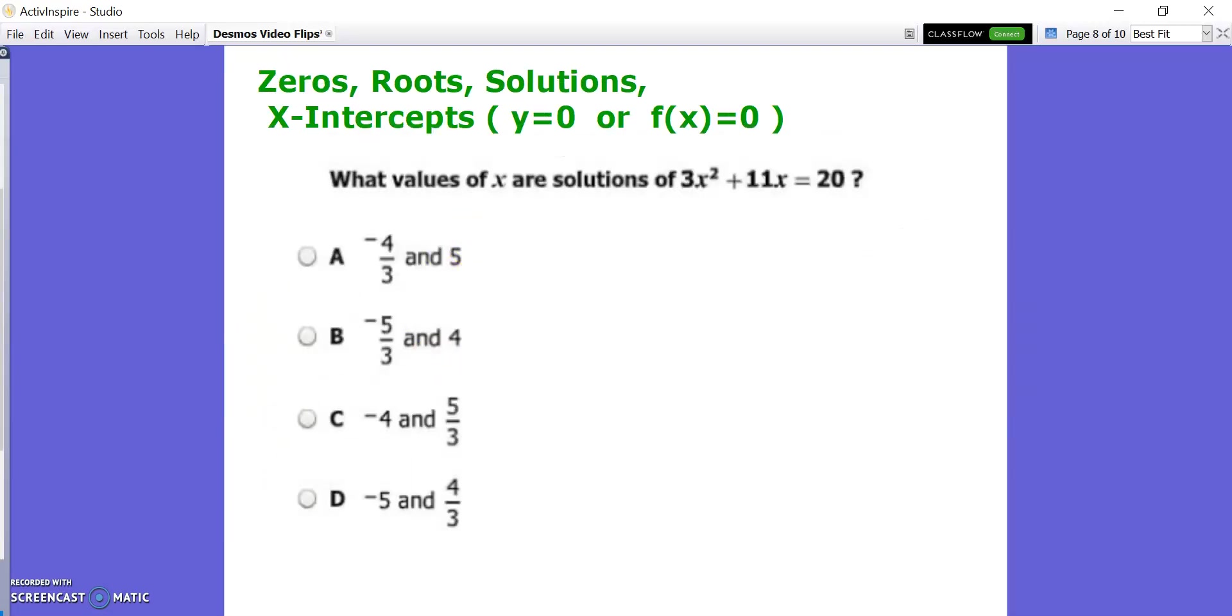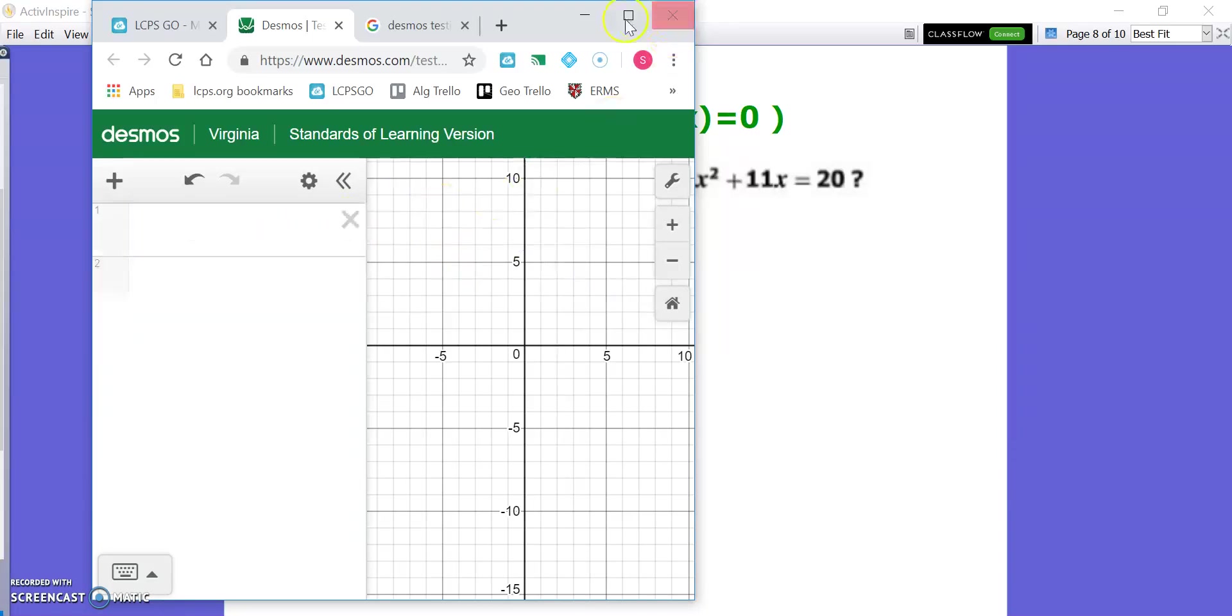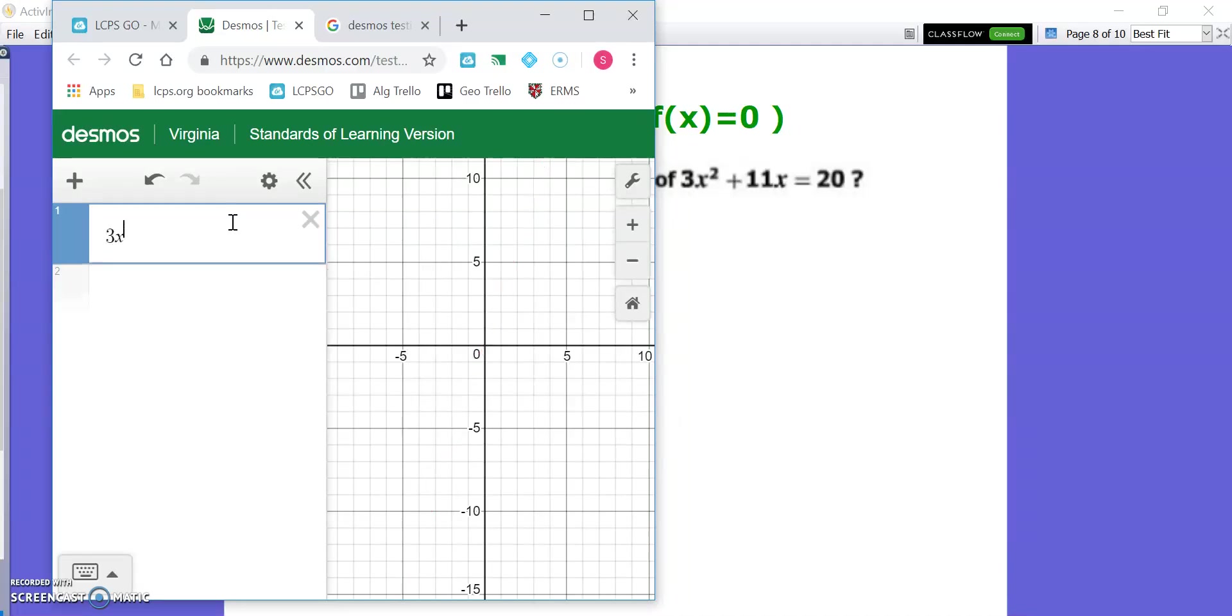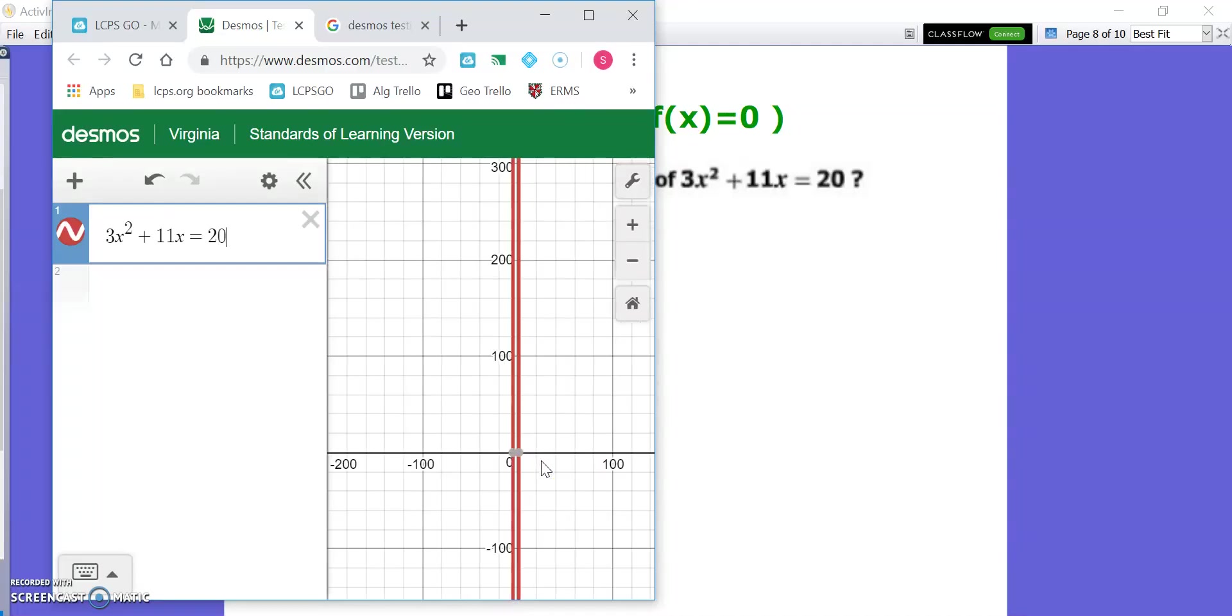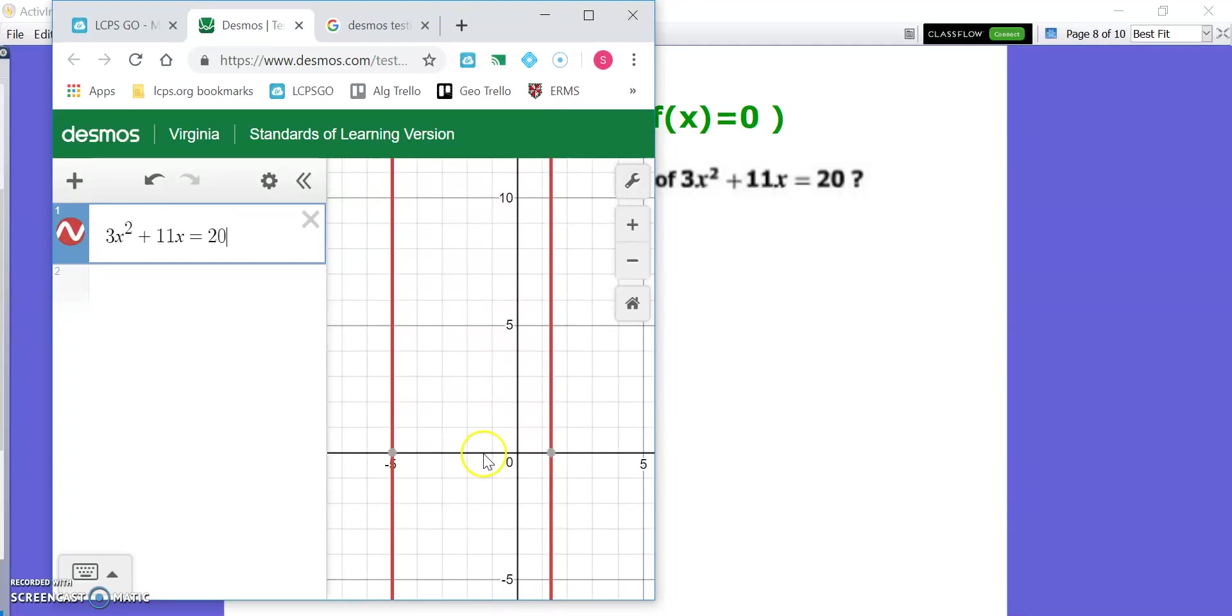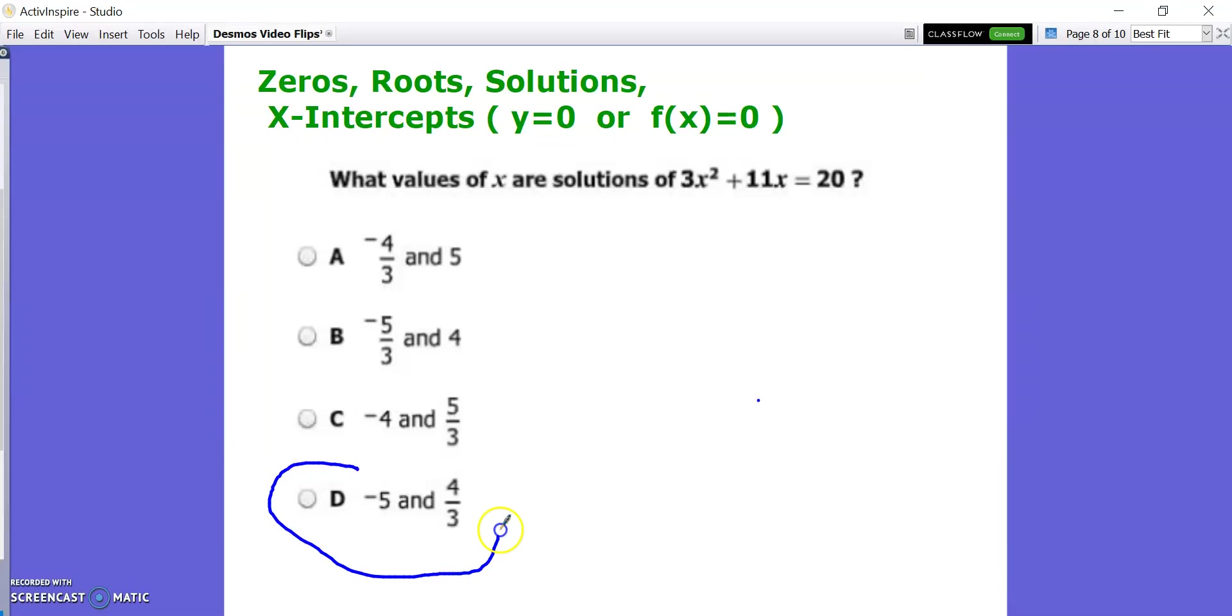Last one is finding roots. Roots are the same thing as zeros, solutions, or x-intercepts, which is when y is 0 or f of x equals 0. So to do that, also pretty simple. Get rid of these. We're just going to type in that formula here, this equation. 3x squared. Get out of the exponent by clicking right. Plus 11x equals 20. So they're going to be the x-intercepts, which if you look, it kind of highlights them for you. Now this has a really low vertex, so I'm not even going to try and find it here. So let me just zoom in. Here's one at negative 5, 0, and here's one at 1.3 repeating 0, which is the same as positive 4 thirds. So that would be answer choice D. Easy.